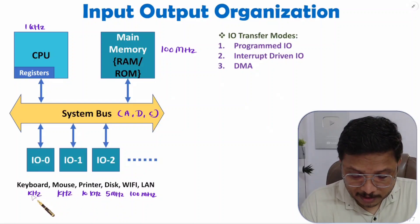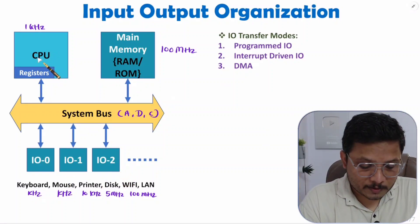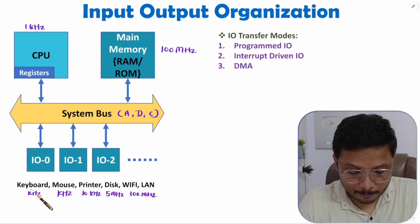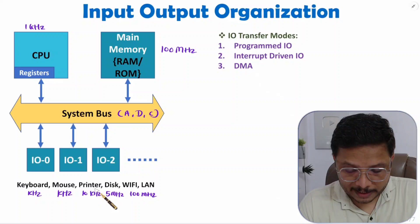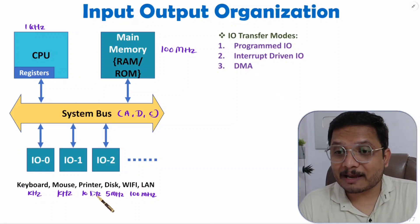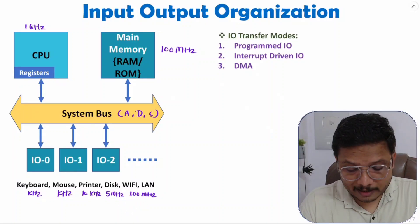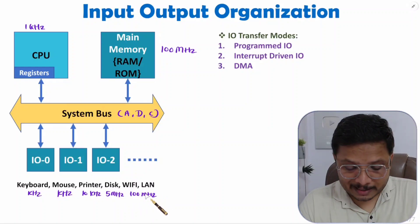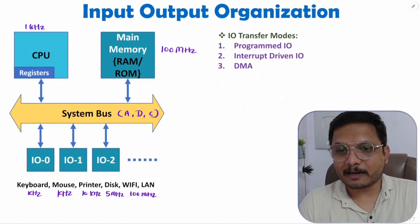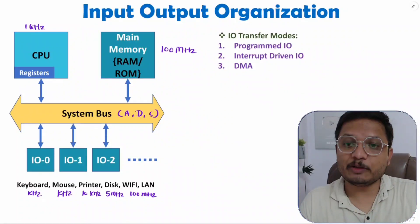You see, with IO devices the speed varies greatly. Comparing IO speed with respect to CPU — which is in the gigahertz range — it is way lower. Compared to keyboard, the speed of CPU is one million times higher. Compared to printer, it is higher by 10 to the power 5 times. When it comes to disk, CPU speed is hundreds of times greater. And compared to Wi-Fi and LAN, CPU speed is still way greater.